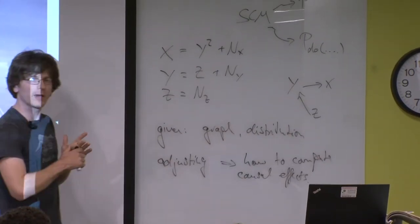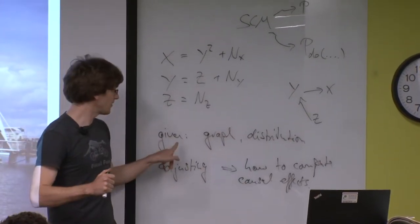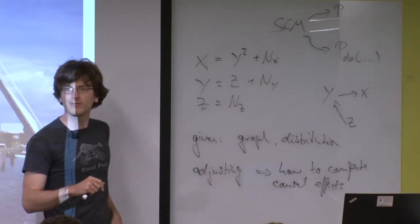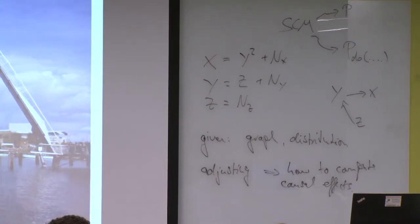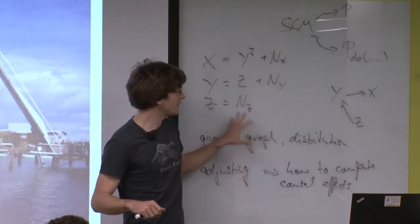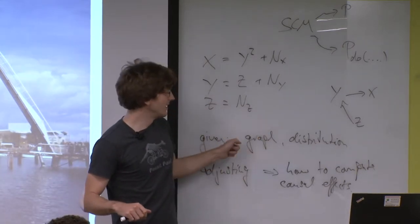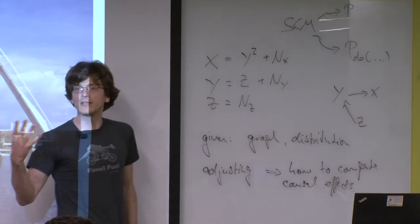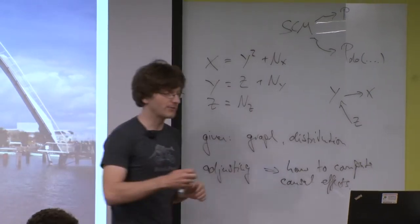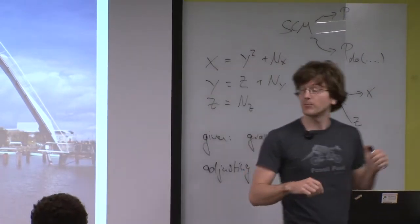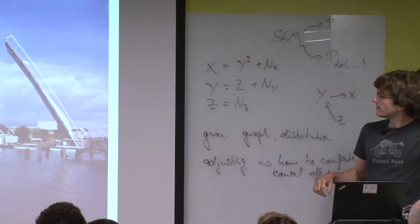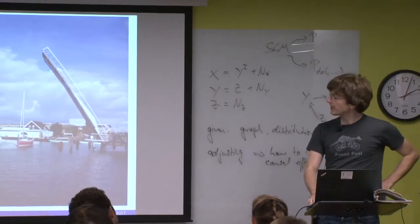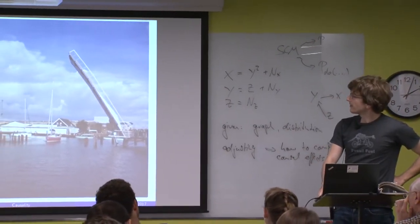So what are we actually solving? What is given and what are we trying to infer? We talked about adjustment. So far we have always assumed we are given the causal structure, and we will try to relax this in the second part of this tutorial.